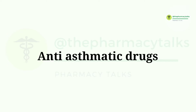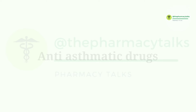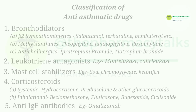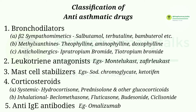So let's begin. Anti-asthmatic drugs can be classified into following classes. First is bronchodilators. They are further classified as: Beta-2 sympathomimetics. Examples of beta-2 sympathomimetics are salbutamol, terbutaline, and bambuterol.